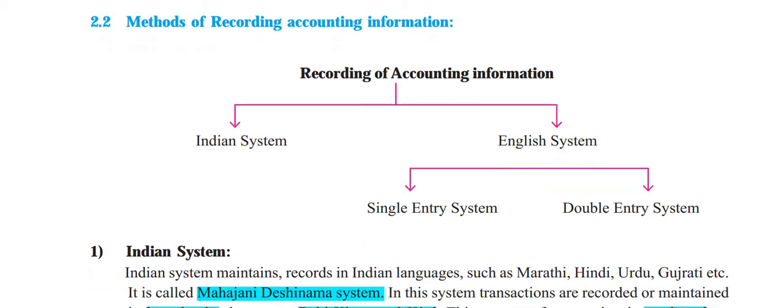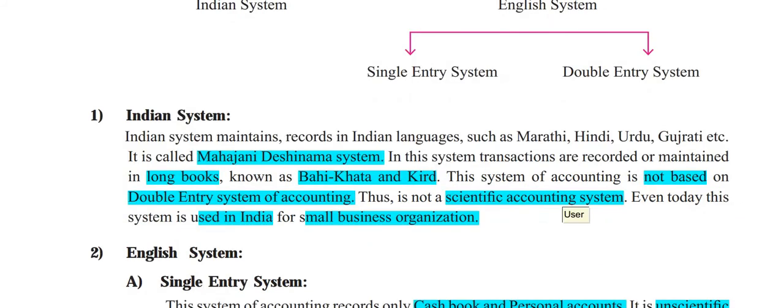We will understand the Indian system. This is an informatory video, but this knowledge is very important. The Indian system maintains records in Indian languages such as Marathi, Hindi, Urdu, and Gujarati. They are also called the Mahajani or Deshi-Nama system.